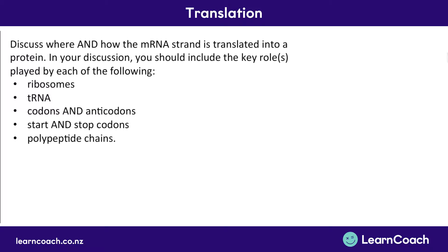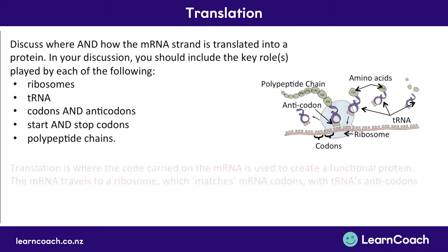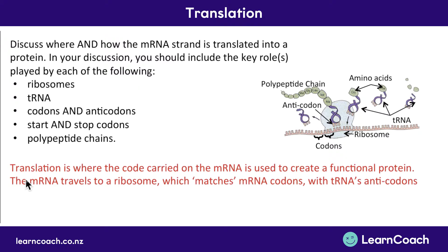Let's look at a question. Here we want to discuss where and how the mRNA strand is translated into a protein. In our discussion we'll cover the key roles of the ribosome, tRNA, codons and anticodons, polypeptide chains, and start and stop codons. Translation is where the code carried on the mRNA is used to create a functional protein — that's the purpose of everything.